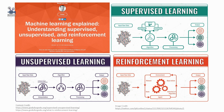The third learning category is reinforcement learning. Reinforcement learning is an area of machine learning about taking suitable action to maximize reward in a particular situation. It is employed by various software and machines to find the best possible behavior or path to take in a specific situation. Reinforcement learning differs from supervised learning in that supervised learning has answer keys in the training data, whereas in reinforcement learning there is no answer — the reinforcement agent decides what to do based on experience.